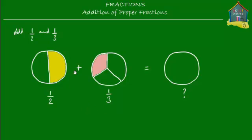So if we want to add up these two slices, we must first change them to the same-sized slices — that is, change these two fractions to like fractions. In terms of pizza, we must cut up both pizzas into the same number of slices.